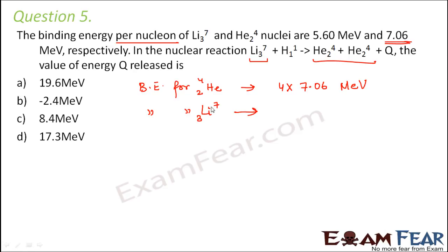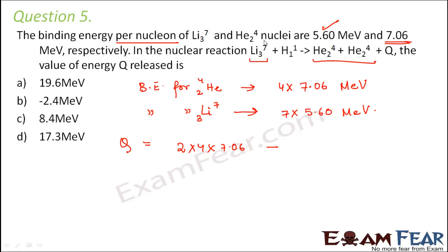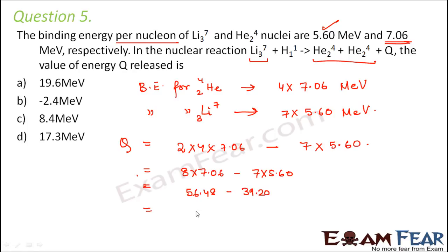Similarly, binding energy for lithium: in lithium we have 7 nucleons, so per nucleon it is 5.60, giving 7 multiplied by 5.60 mega electron volt. So energy released equals total binding energy of 2 helium, that is 2 into 4 into 7.06, minus total binding energy for lithium, that is 7 into 5.60. This equals 8 into 7.06 minus 7 into 5.60, which is 56.48 minus 39.20, equal to approximately 17.3 mega electron volts.